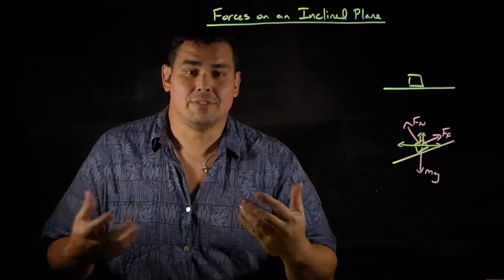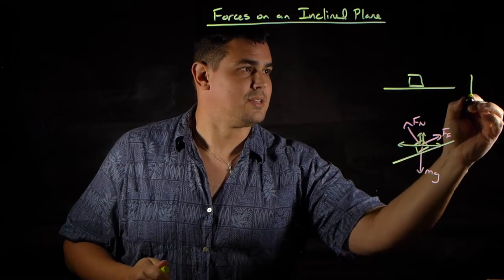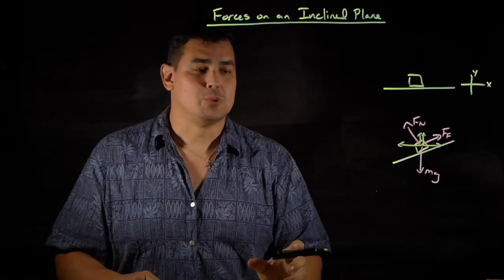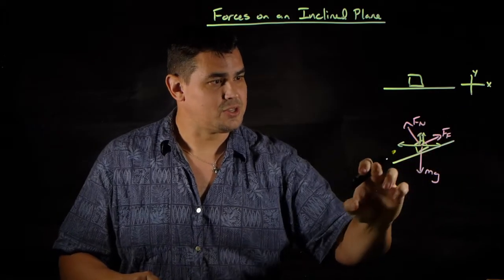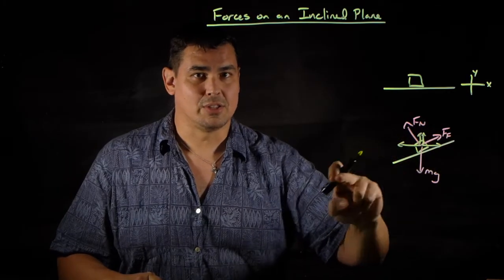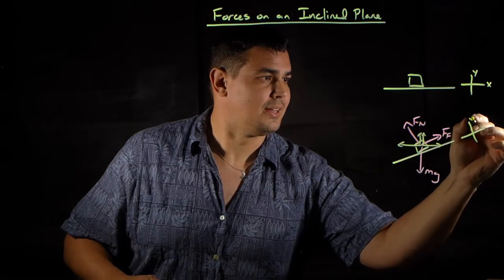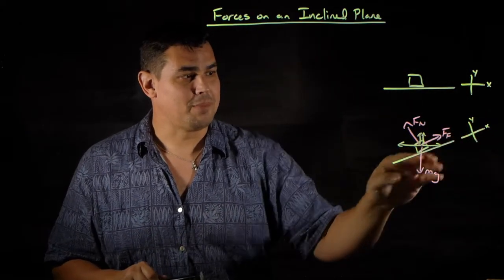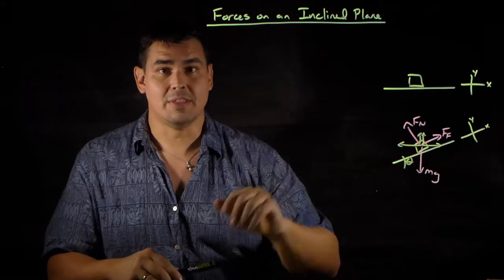Luckily, you get to define your coordinate system. In this case, your x and y look like this. All we're going to do is tilt our coordinate system so that it matches the ground, so that our x-axis is always parallel to the ground. So in this case, our coordinate system is tilted by the angle of the incline.